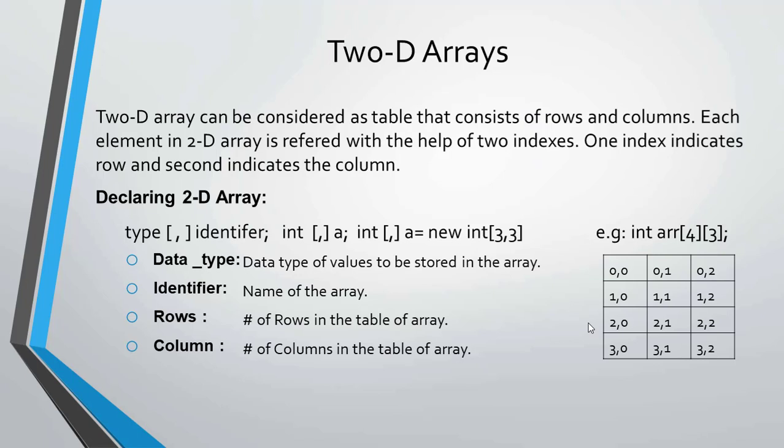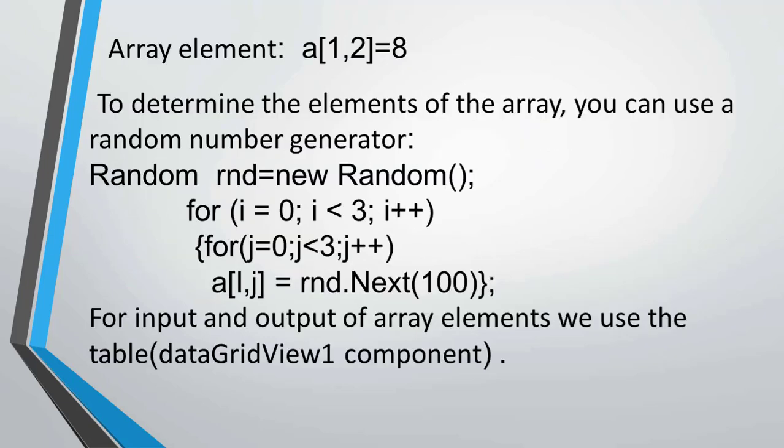In this declaration we use the data type, the identifier, the number of rows, and the number of columns. To access or show an element of the array, we use the row index and the column index.